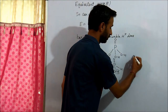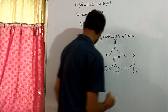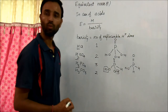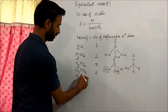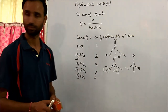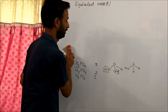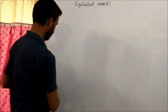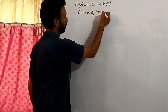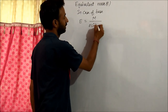In the case of H₃PO₂, its basicity is 1, because it has only one OH group. Even though the formula shows three hydrogens, only one is attached to oxygen, so only one replaceable H⁺ is available.